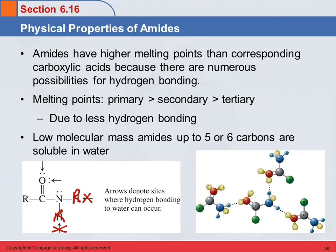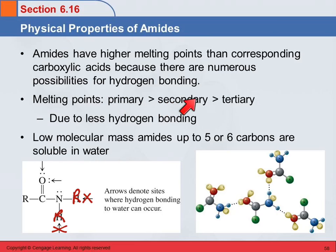So the melting point trend is that primary amides have a higher melting point than secondary, and tertiary amides are going to have the lowest melting points.